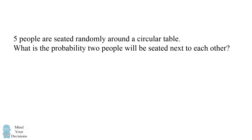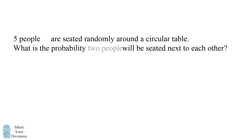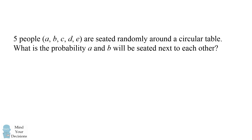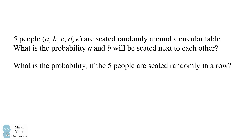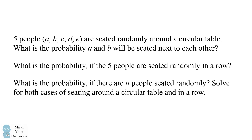Five people are seated randomly around a circular table. What is the probability two people will be seated next to each other? We can make the question more precise by labeling the people as A, B, C, D, and E, and asking about the probability that A and B will be seated next to each other. The next part is to ask for the same probability if the five people are seated randomly in a row. Then generalize: what is the probability if there are N people seated randomly? Solve for both cases of seating around a circular table and in a row.